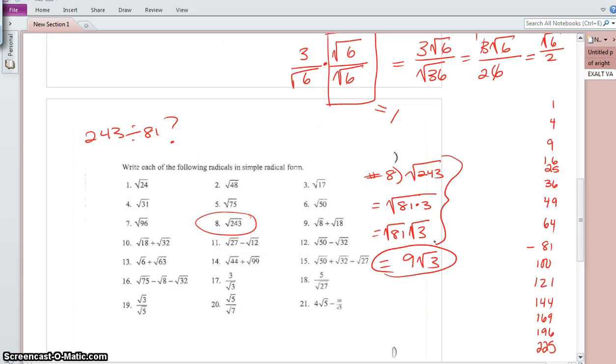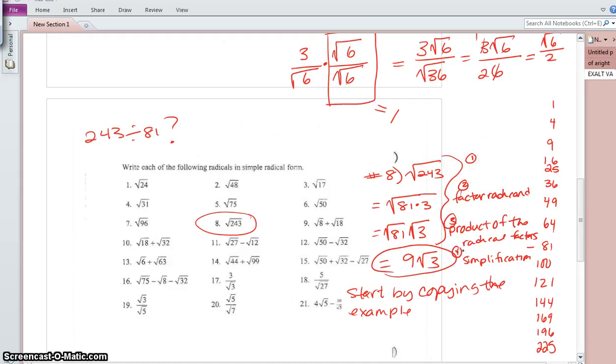This is the correct procedure for number 8. So please start by copying the example directly off of this page. And then work through a series of steps. The first one is the product of the radicand, or the factor value of the radicand. And then this is the product of the radical factors. And this is the simplification. One, two, three, four. Of course, sometimes there's some addition. So let's review example one to see the addition.